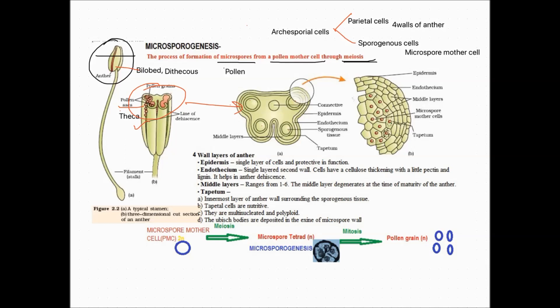In the young anther, a group of meristematic tissues divides and gives rise to two kinds of cells. Parietal cells give rise to the four walls of the anther on maturation. Sporogenous cells further divide and give rise to microspore mother cells.